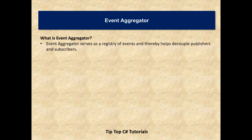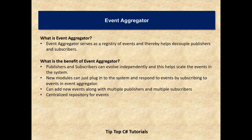Event Aggregator serves as a registry of events and thereby helps decouple publishers and subscribers — that is the definition of Event Aggregator. Publishers and subscribers can evolve independently and scale the events in the system, because there is a single place where all the publishers and subscribers are mapped.